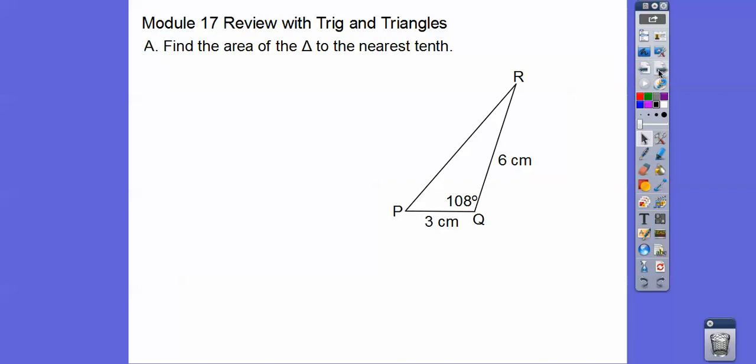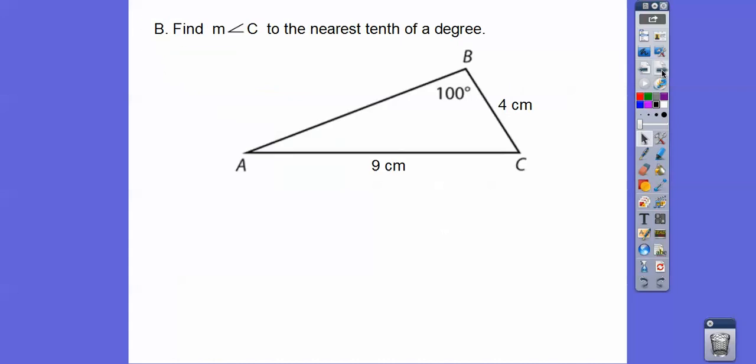So find the area of this triangle to the nearest tenth. Do you remember the area? It goes one-half the product of the sides times the sine of 108, times the sine of the included angle. So that's 18, a half of 18 is 9, so the sine of 108 is about 0.9511, so about 8.6 centimeters squared. Don't forget area is always in square units, in this case centimeters.